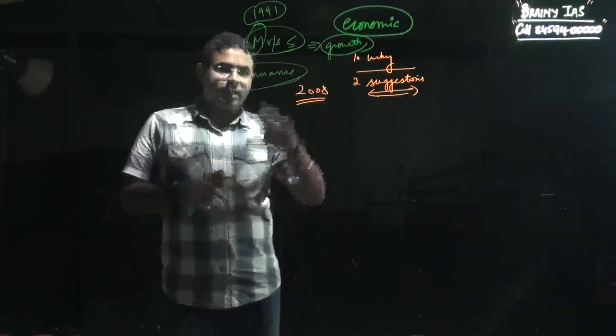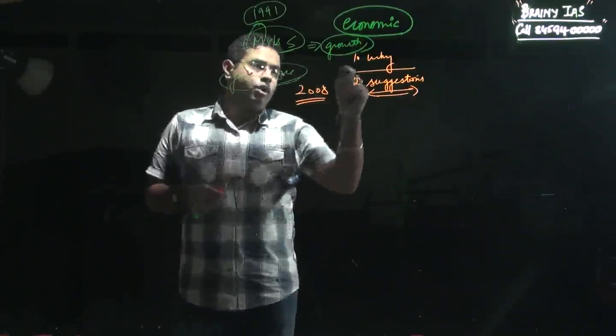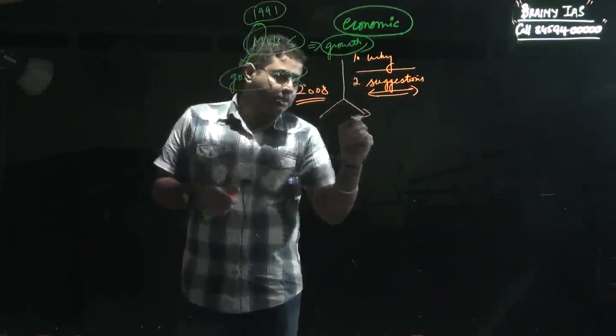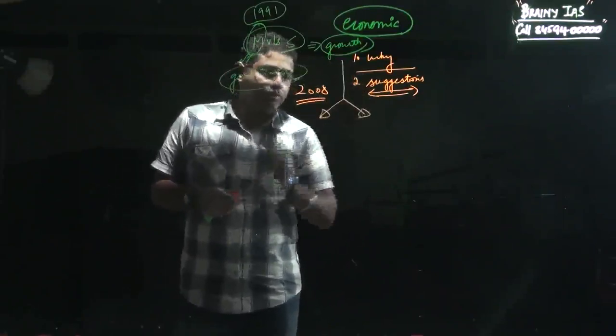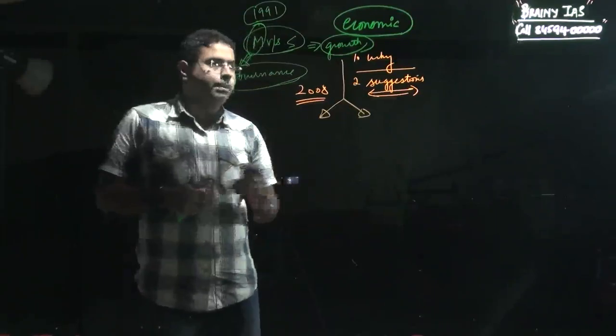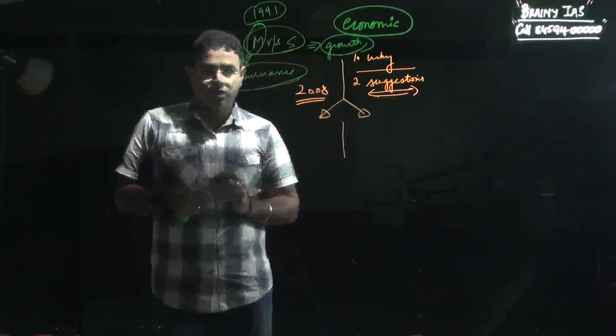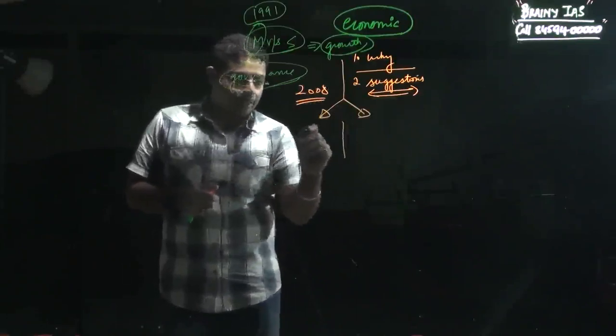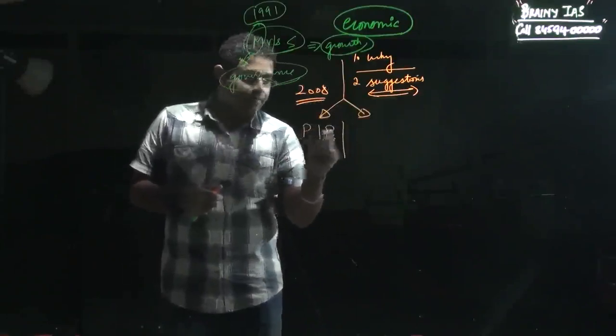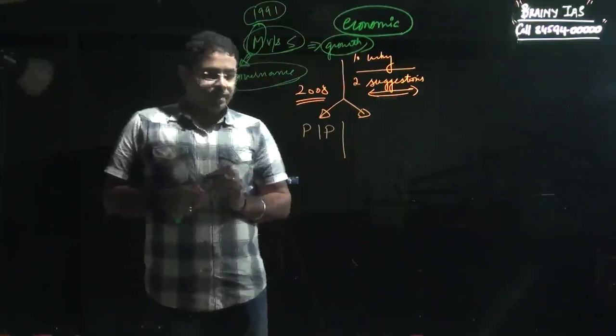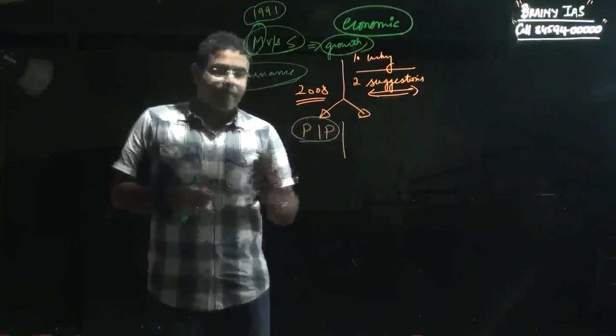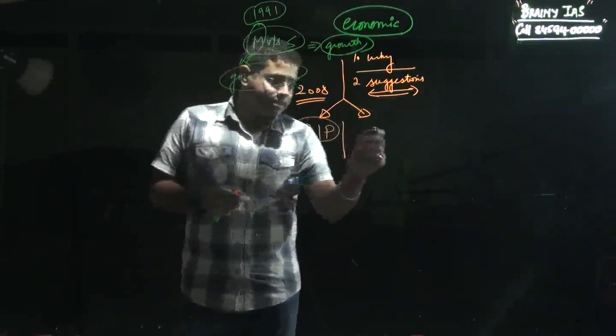When it comes to the growth rate that any economy should be achieving, there are two inputs that actually propel this growth rate. The first aspect that propels the growth rate is the investment that is done by the public sector and the private sector domestically. Secondly, the investment that is done by international players, that is in the form of FDI and FIA.